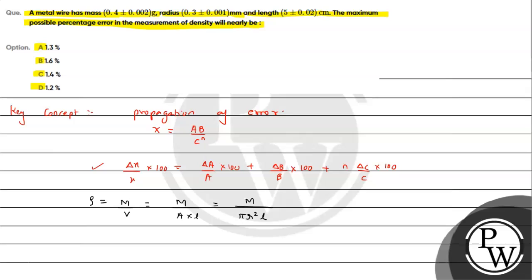Now this formula is of the type x equals ab upon c raised to n. So now we can write directly percentage error: delta rho upon rho times 100 will equal delta m upon m times 100 plus, since we have r squared, we need to multiply 2 times delta r upon r.